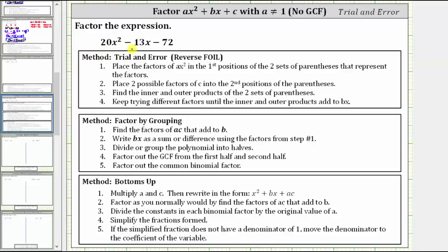We were asked to factor the expression 20x² - 13x - 72. In a previous lesson, we discussed three possible methods for factoring a trinomial in this form, which is the form ax² + bx + c, with a not equal to one, and no common factor other than one.